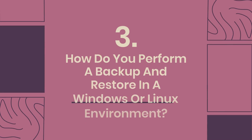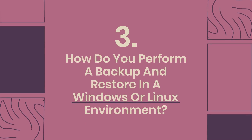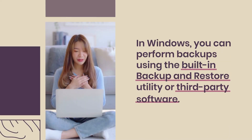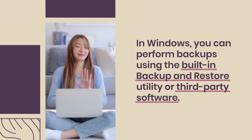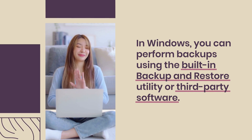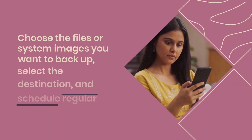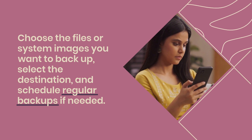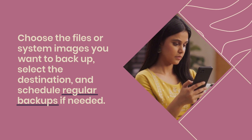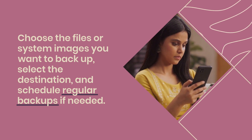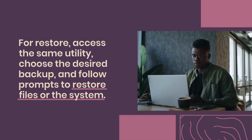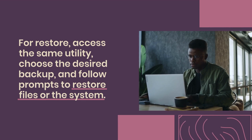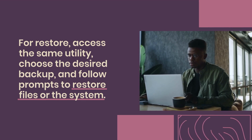Question 3: How do you perform a backup and restore in a Windows or Linux environment? In Windows, you can perform backups using the built-in backup and restore utility or third-party software. Choose the files or system images you want to backup, select the destination, and schedule regular backups if needed. For restore, access the same utility, choose the desired backup, and follow prompts to restore files or the system.